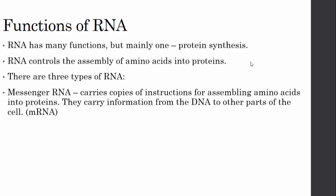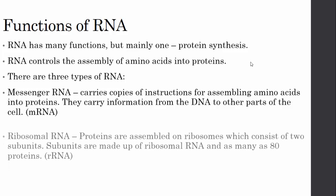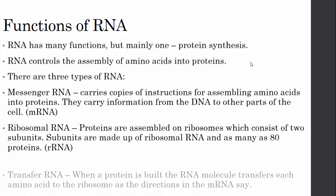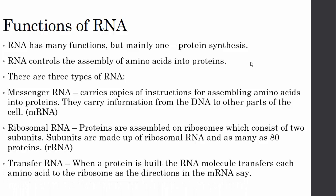mRNA carries information from the DNA to other parts of the cell. We also have ribosomal RNA, or rRNA. Proteins are assembled on ribosomes, which consist of two subunits made up of ribosomal RNA and as many as 80 different proteins. The last type is transfer RNA, known as tRNA. When a protein is built, the tRNA molecule transfers each amino acid to the ribosomes as directed by the instructions in the mRNA.